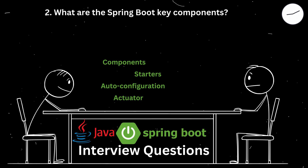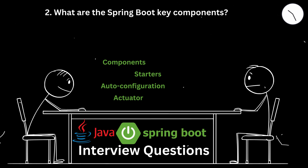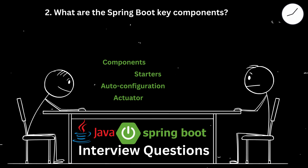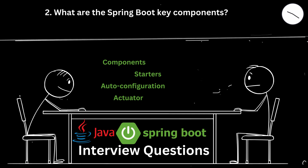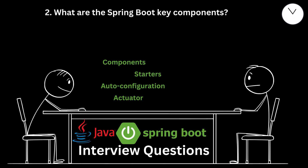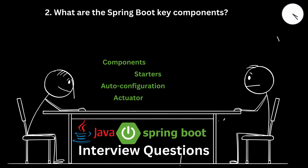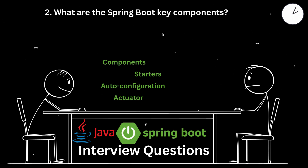Spring Boot CLI is a command line tool for rapidly prototyping with Spring. For a prototype of a digital wallet service, we used Spring Boot CLI to quickly create and test different service components using Groovy scripts. Spring Initializer is a web-based tool to bootstrap a new Spring Boot project; when starting a new project for an insurance management system, we used Spring Initializer to generate the initial project structure with necessary dependencies.